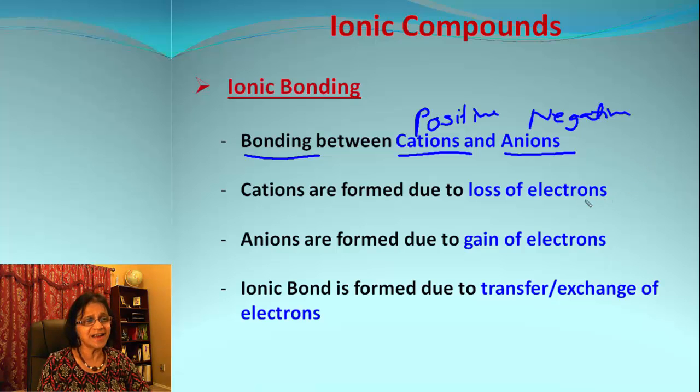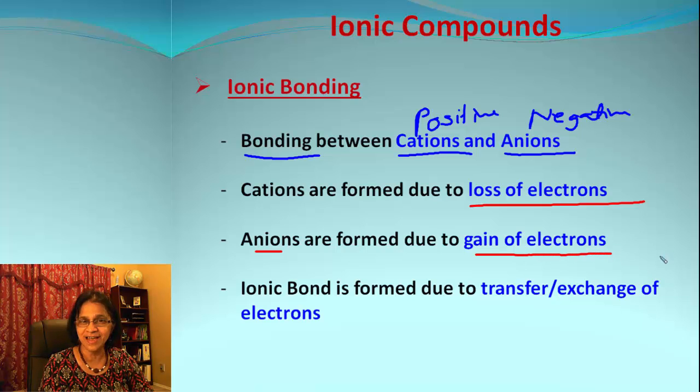So how are cations formed? Cations are formed when electrons are lost. Electrons are gone and they take away the negative charge with them, that leaves the positive charge on cations. And anions will be formed in exactly reverse order. That will be because of gain of electrons. Think about electrons bringing the baggage of negative charge, and the ion will get a negative charge.